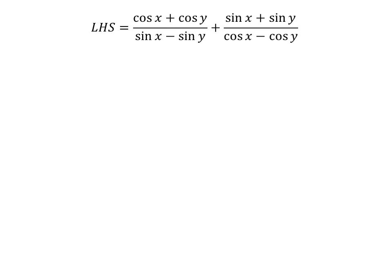Let us start from the left hand side of the identity. The left hand side is equal to cosine of x plus cosine of y upon sine of x minus sine of y, plus sine of x plus sine of y upon cosine of x minus cosine of y.